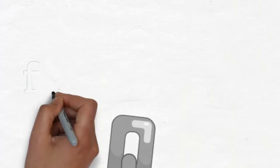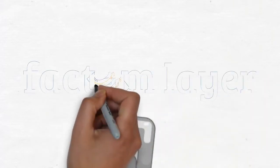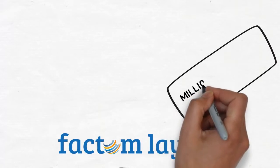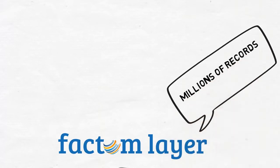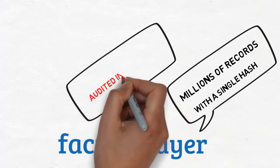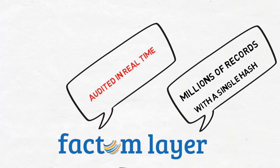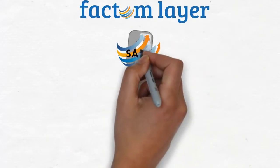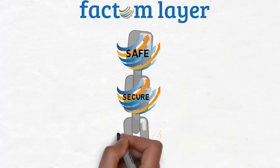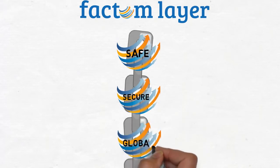That's where Factom comes in. Factom is a data layer for the blockchain. Factom lets you secure millions of records on the blockchain with a single hash every ten minutes. Factom also gives you the tools to audit all of those records in real time. With Factom, it really is possible to build safer and more secure record keeping on a truly global scale.